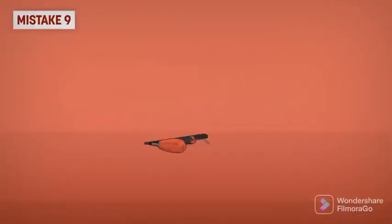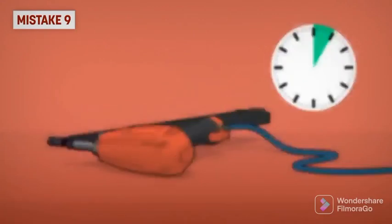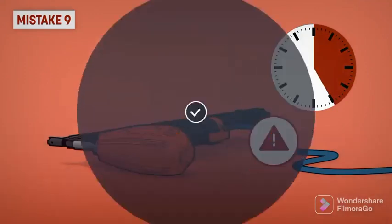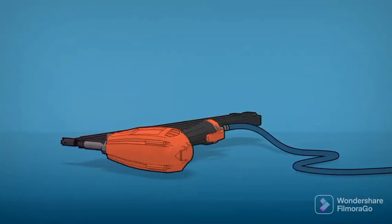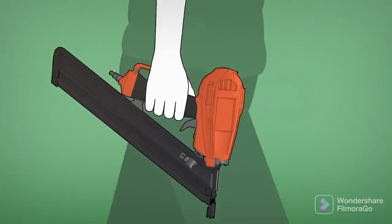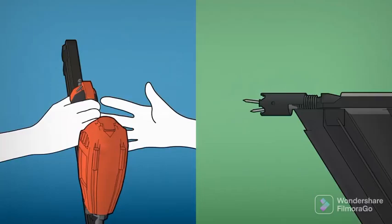Mistake 9: Leaving the nailing gun plugged in unnecessarily. You increase the risk of an accidental firing and of injury by leaving it plugged in. When not in use, unplug the air hose. You also need to unplug the hose when carrying the nailing gun, passing it to someone else, or when removing a jam nail.